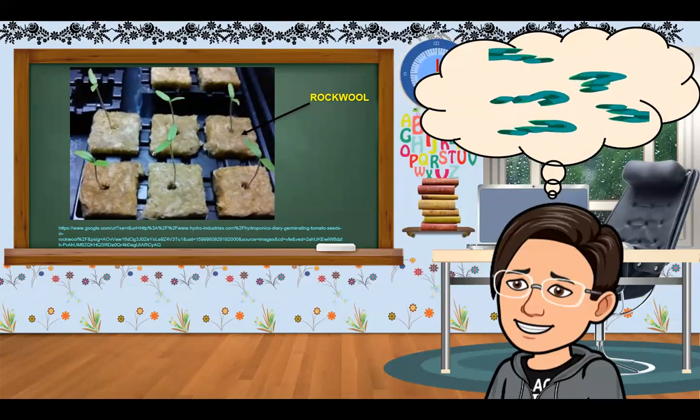A seedling in a rock wool cube can easily be transplanted into an NFT, ebb and flow, or drip system.